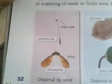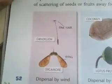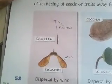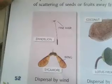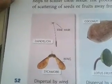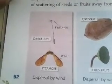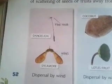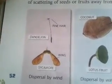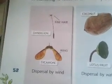Seeds can be dispersed by wind from one place to another place easily. So we can say that wind is helpful for scattering or dispersing this type of seed away from the parent plant.